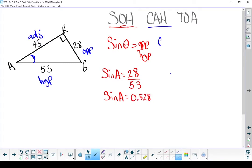Cos of theta. So if I'm working with angle A, cos of angle A equals adjacent, which is 45, over the hypotenuse, which is 53. Cos of A equals 0.849.